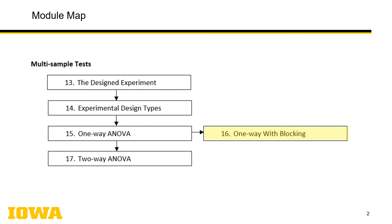As shown in the module map, this is a module within the grouping called Multi-Sample Testing. It's positioned off to the side of the one-way ANOVA because it's not critical to review this module in order to understand the two-way ANOVA, but it is advised to review it anyway, as this particular ANOVA analysis is comparable to that of the paired t-test.